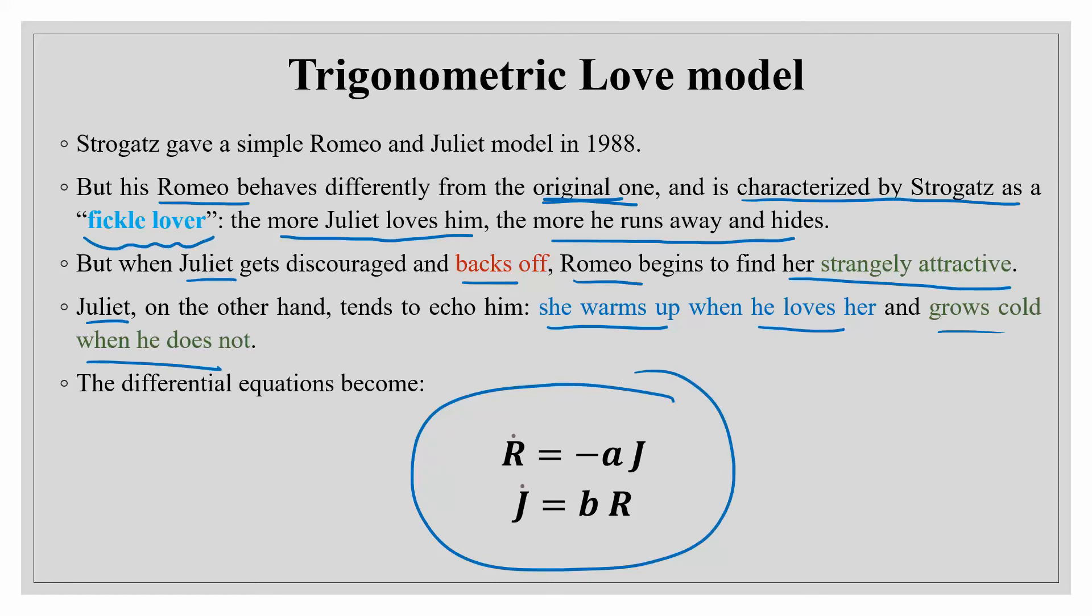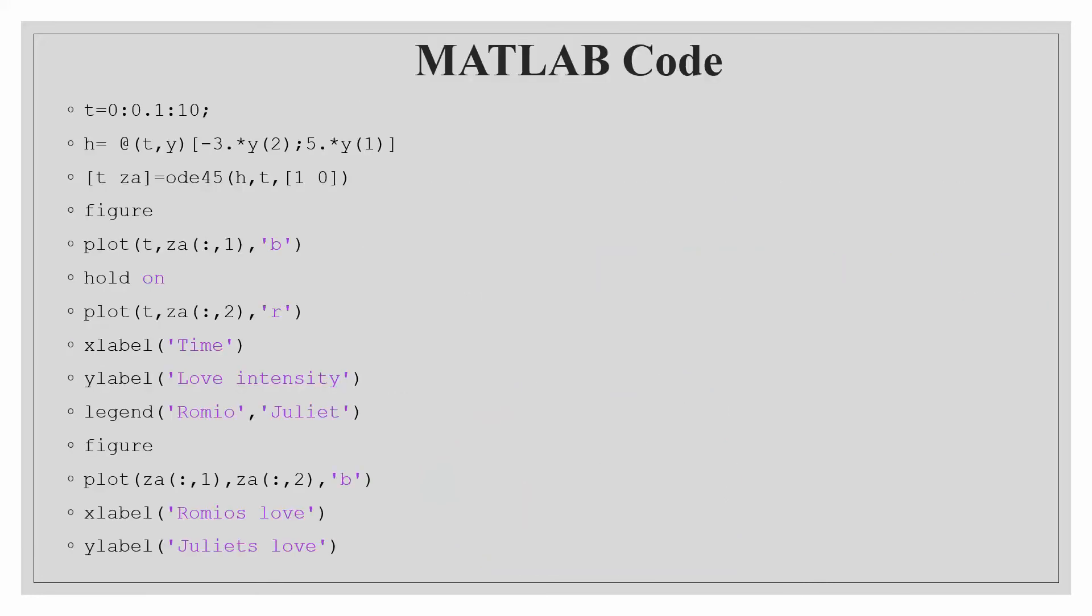This is the scenario which can be modeled by the differential equation as this. Now this is a simple linear model and you can find the solution of the differential equation. Like if we put the value of a and b as 3 and 5 and taking the initial condition as 1 and 0 we have followed the same code as I have explained you for the Lotka Volterra model. Here only this equation is for Romeo and this one this equation is for Juliet.